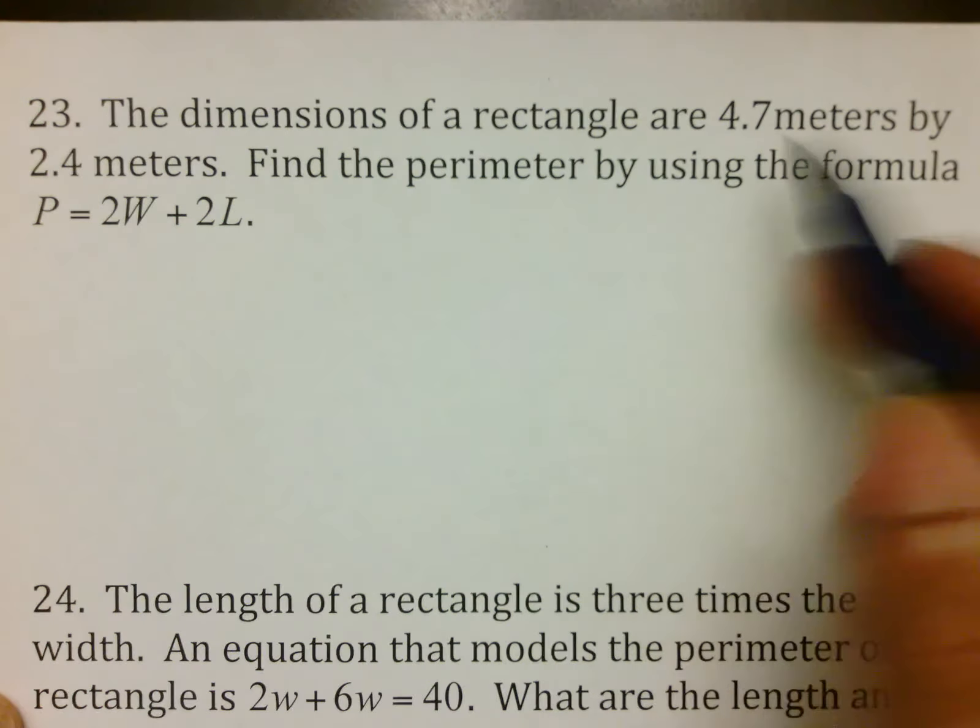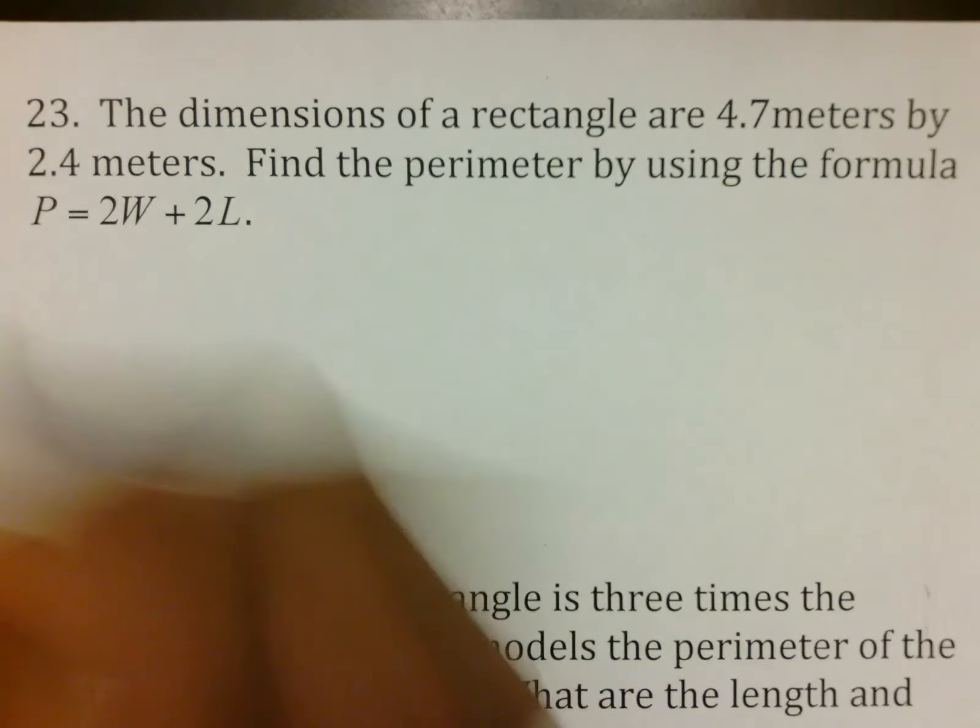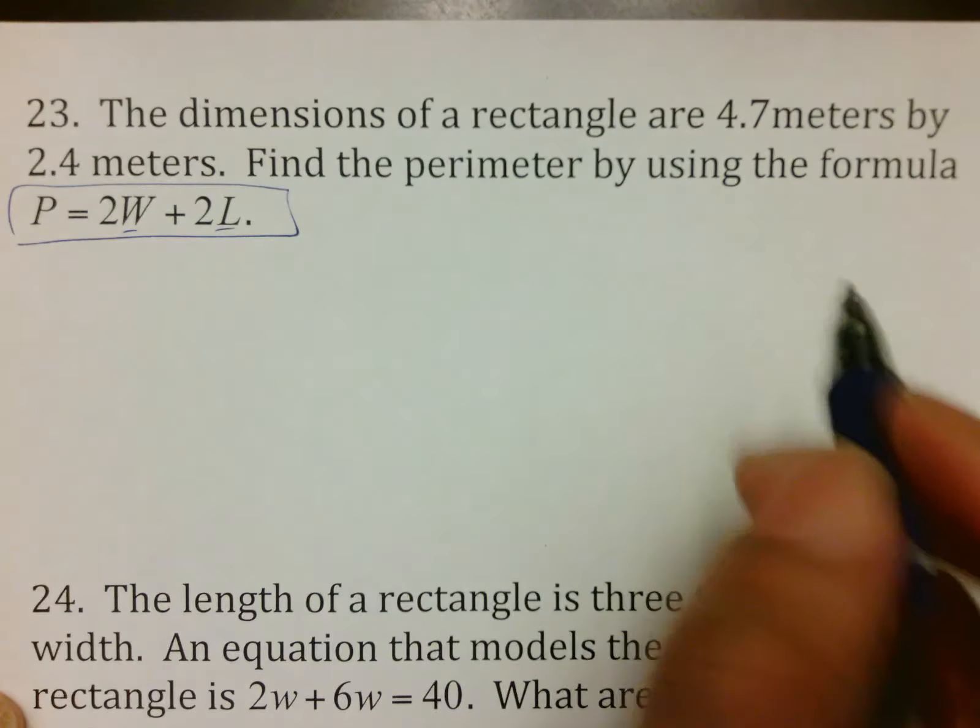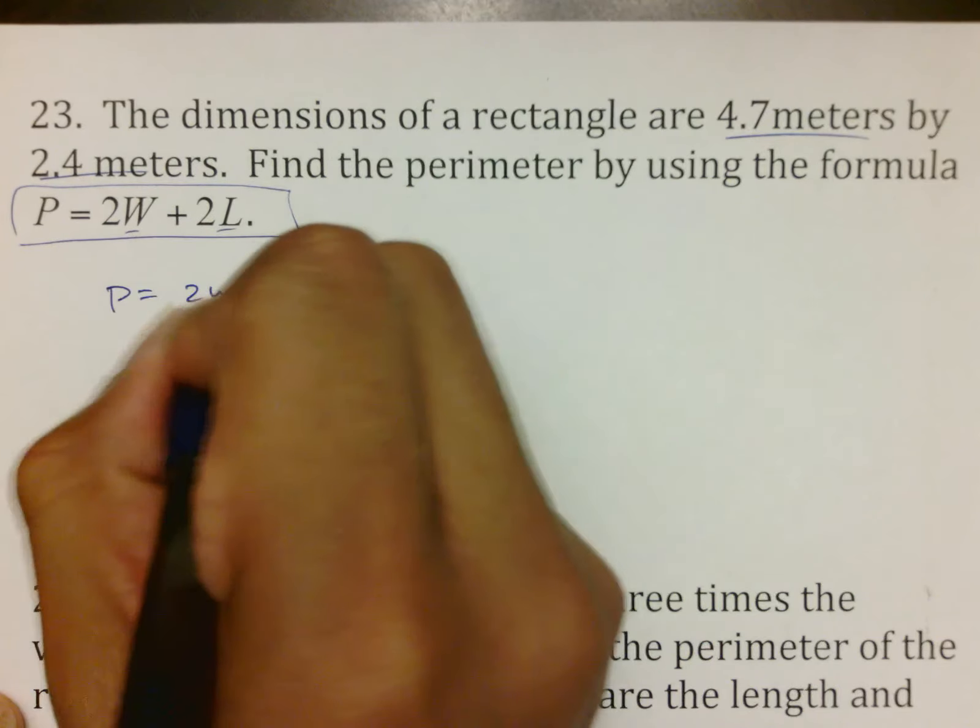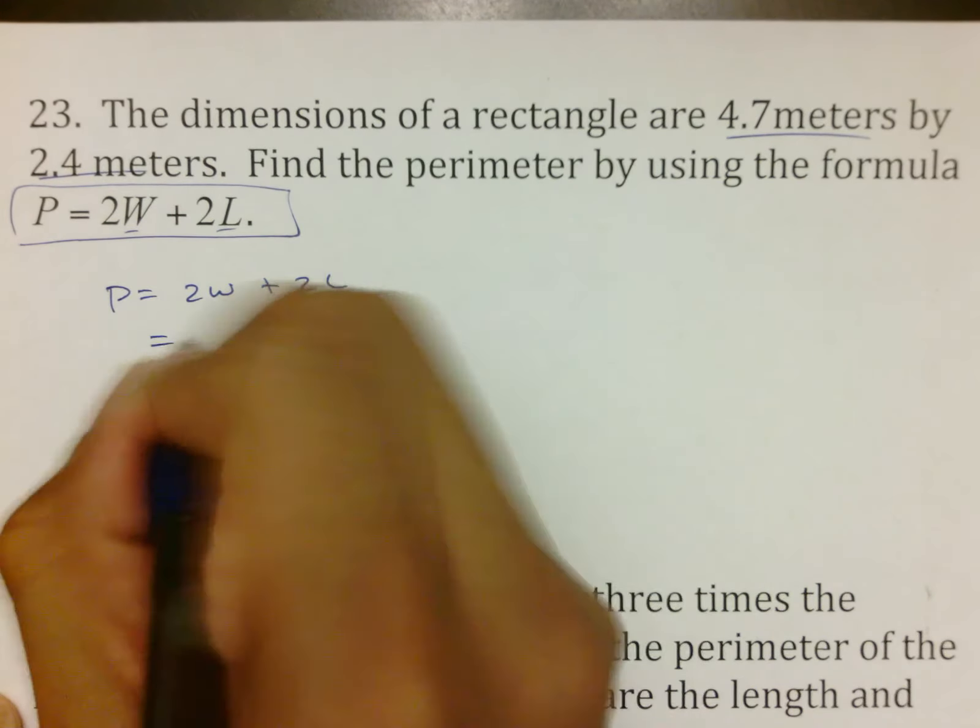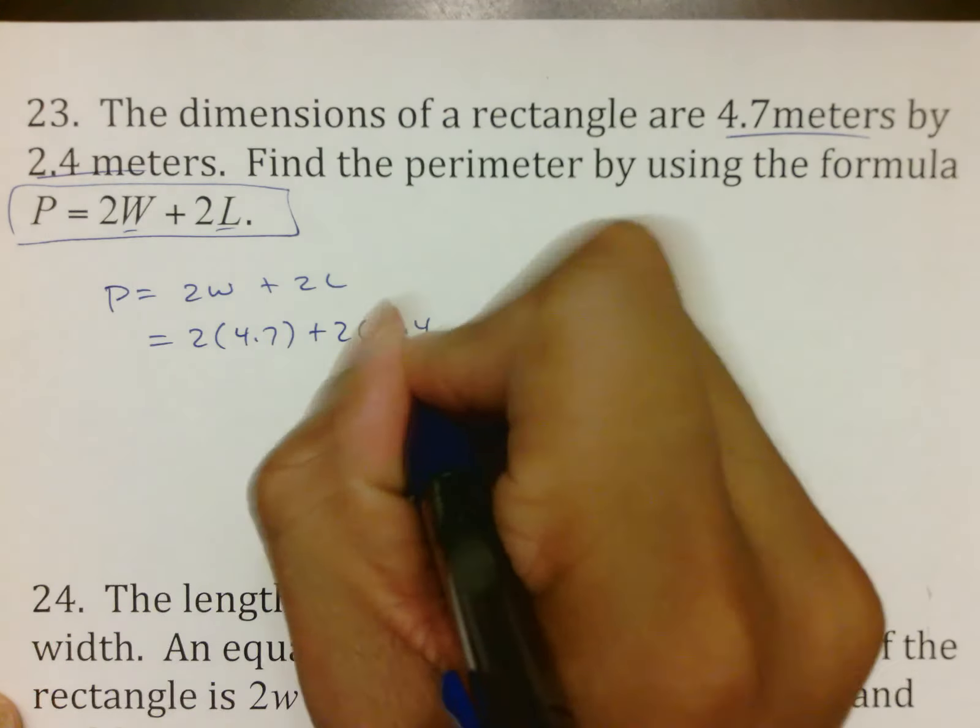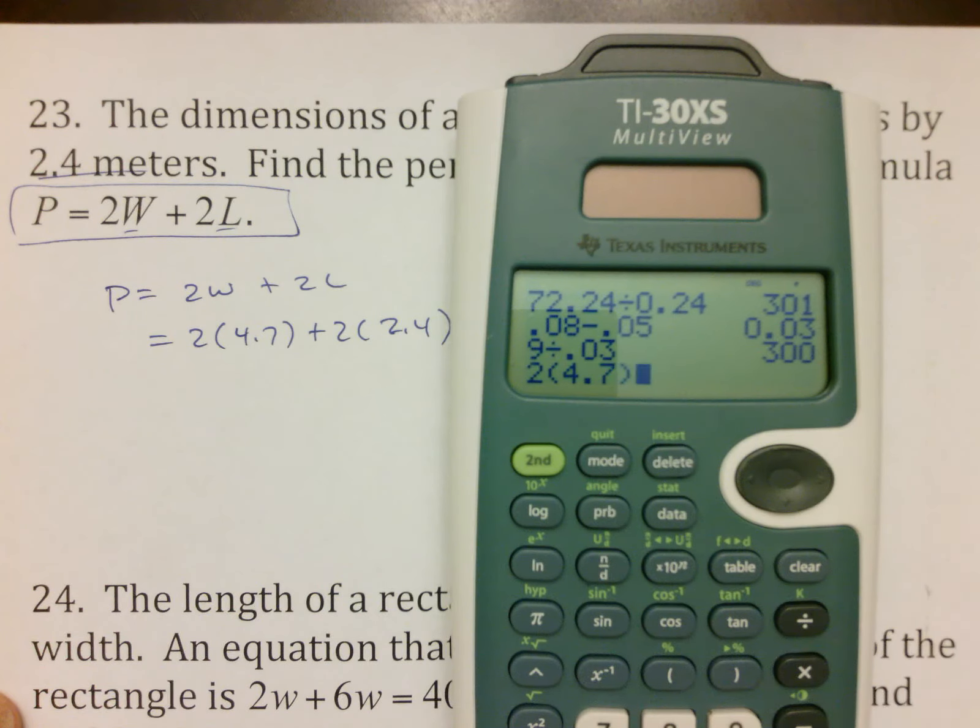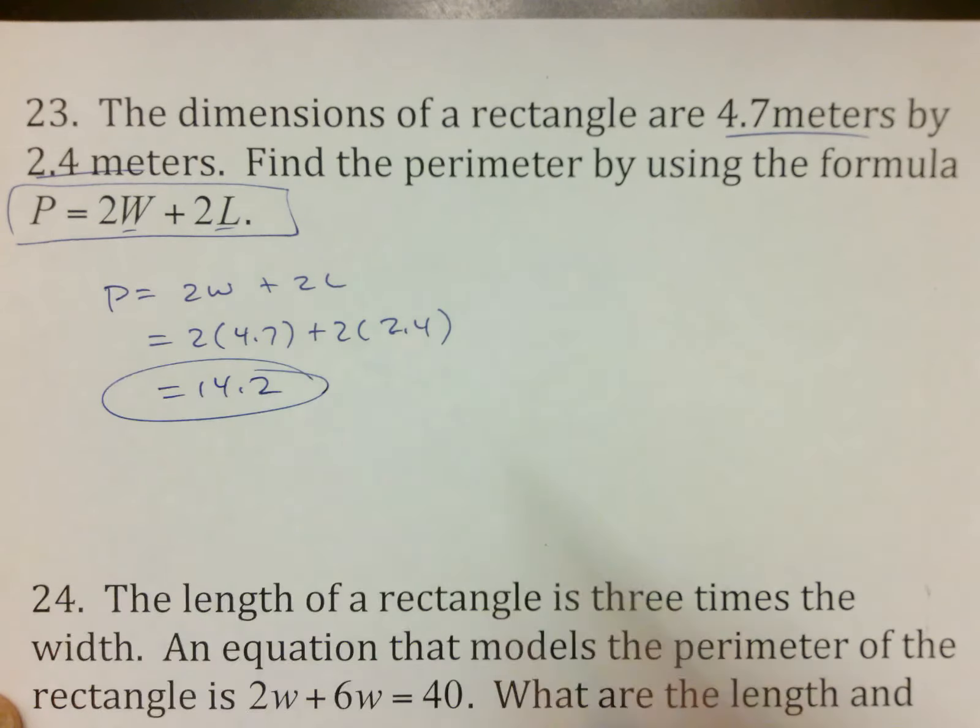Here, dimensions of a rectangle, 4.7 meters by 2.4 meters. Find the perimeter by using the formula 2w plus 2l. Notice that this is an equation. It's got width and length. Remember, it gives us two dimensions, which means just put one of those in for width, one of those in for length. So we're going to put 4.7 in for w, 2.4 in for l, and simply type those things in, 2 parentheses 4.7 plus 2 parentheses 2.4, which is 14.2. And that is all.